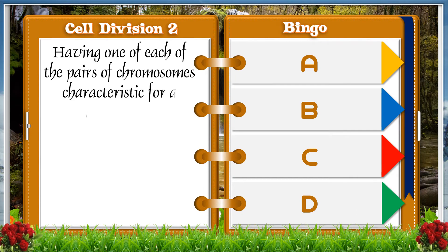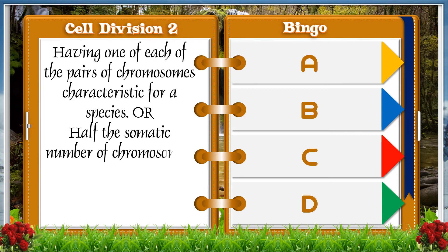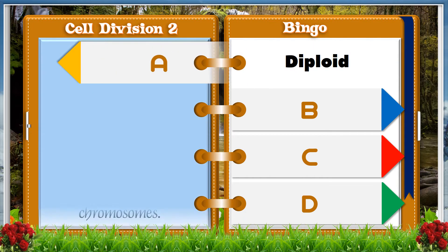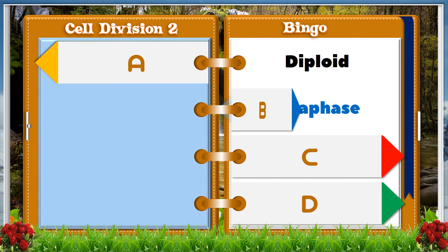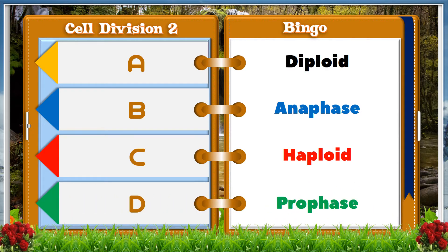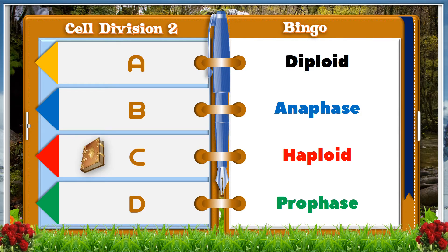Having one of each of the pairs of chromosomes characteristic for a species, or half the somatic number of chromosomes, or a single set of unpaired chromosomes. A: diploid, B: anaphase, C: haploid, D: prophase. And the answer is C, haploid.